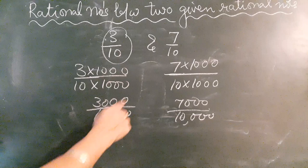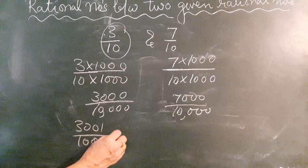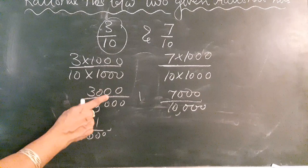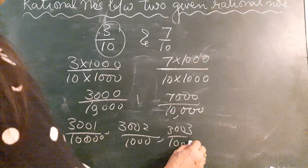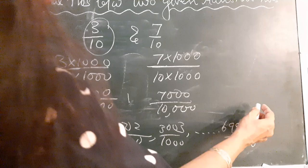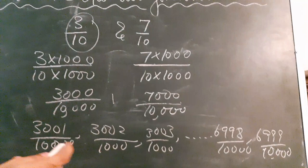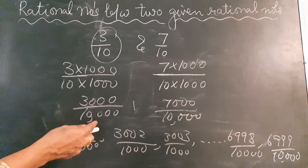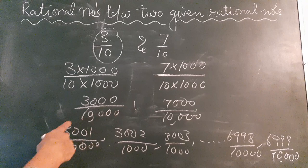Since 3000/10000 and 3/10 are equivalent, the numbers between them will include 3001/10000, 3002/10000, 3003/10000, and so on all the way up to 6998/10000 and 6999/10000. So there are 3999 numbers between these two numbers.